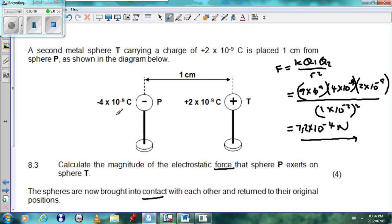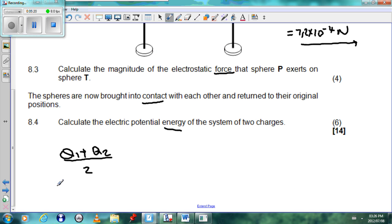And our two spheres will be minus 4 and plus 2. So let's just write it down. Minus 4 times 10 to the power minus 9 plus 2 times 10 to the power minus 9 and that must be divided by 2. We get the answer of minus 1 times 10 to the power minus 9, so that will be the charge on each sphere after they come into contact with each other.